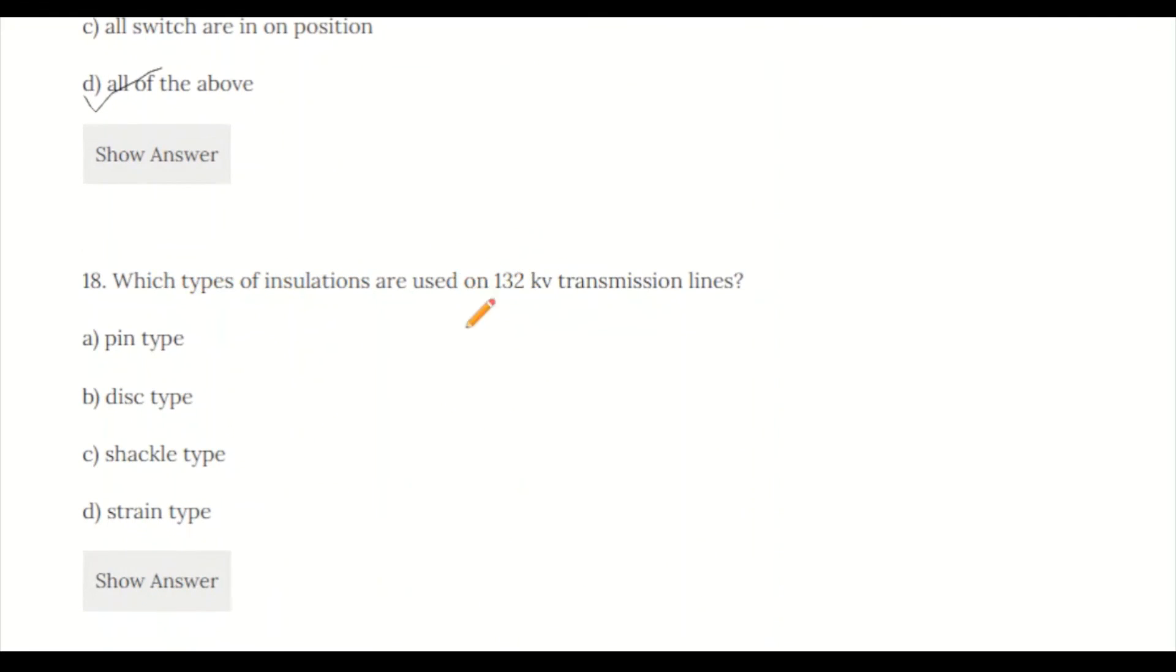Question 18: Which type of insulators are used on 132 kilovolt transmission lines? a) pin type, b) disc type, c) cycle type, d) string type. The correct answer is disc type.